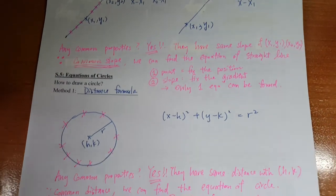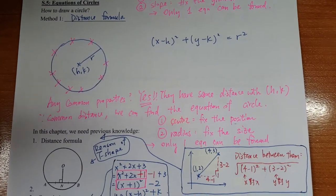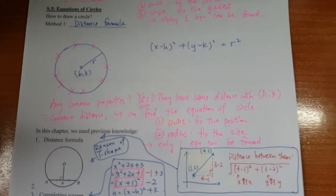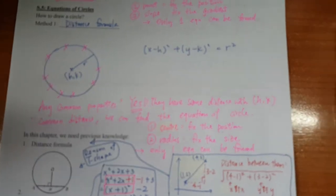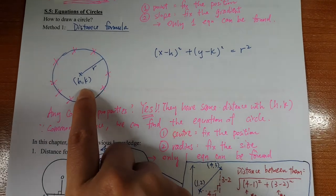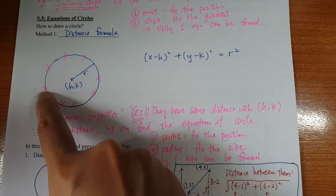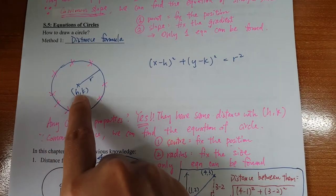For the equation of circle it's very similar. In order to draw the circles you have to find the common points, and you can see that the common properties is that they have the same distance between (h,k).